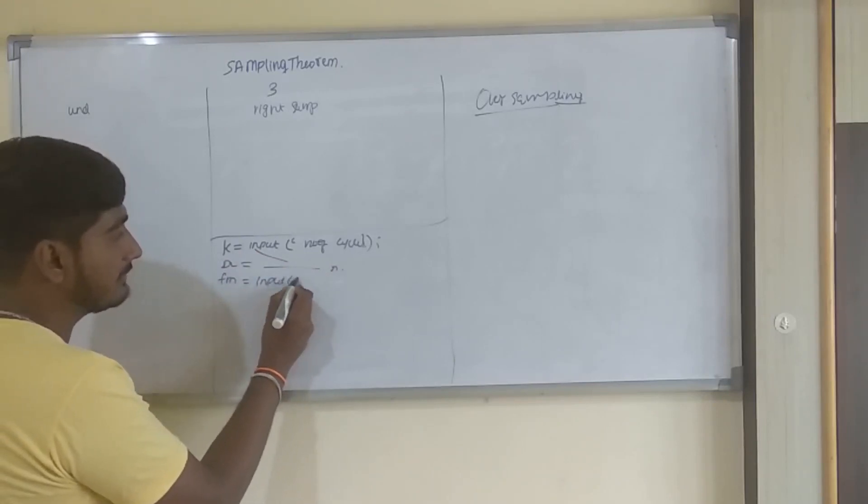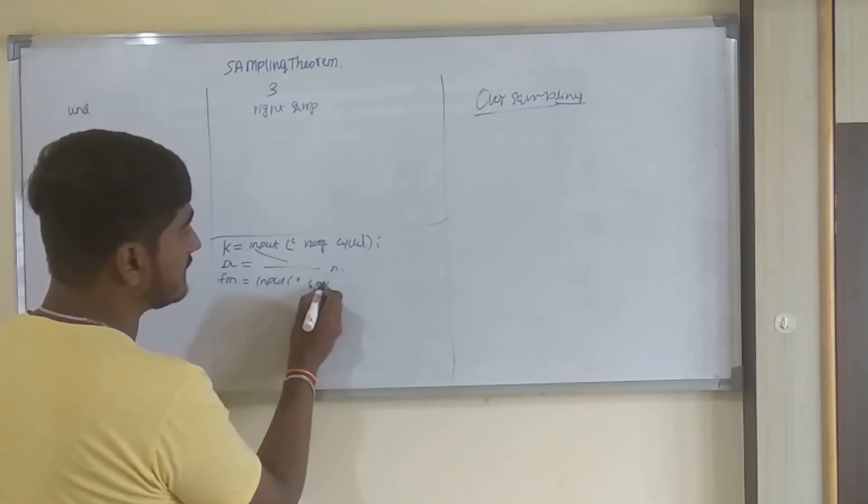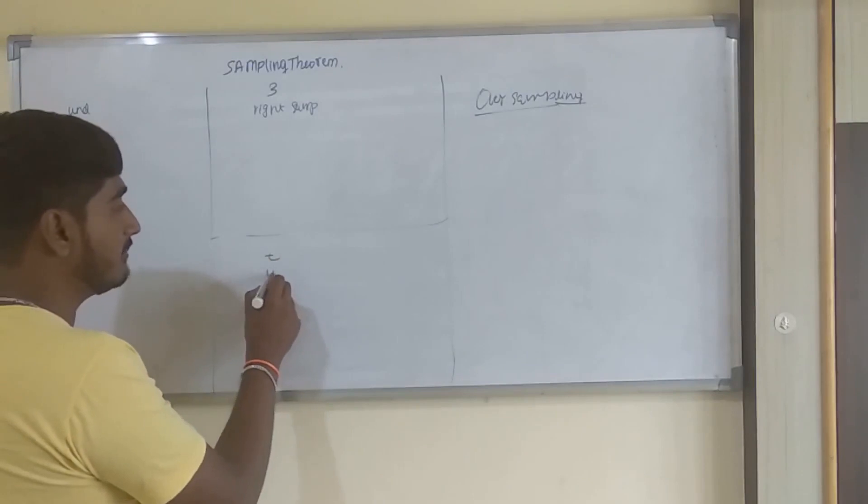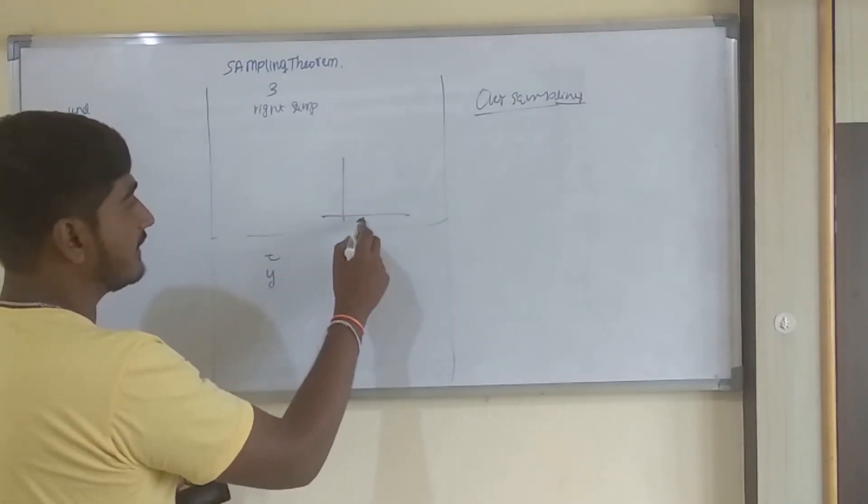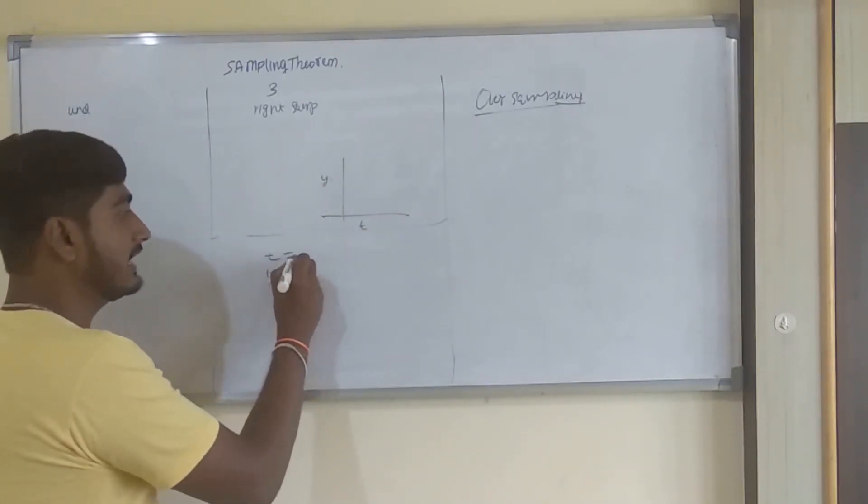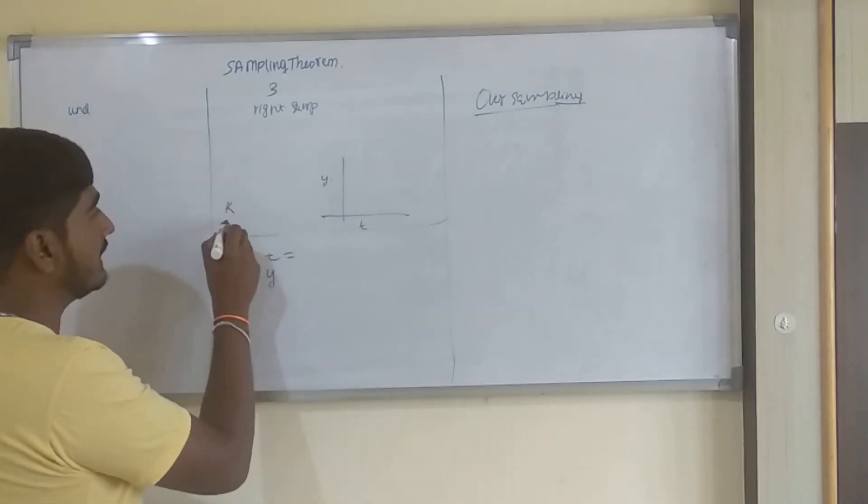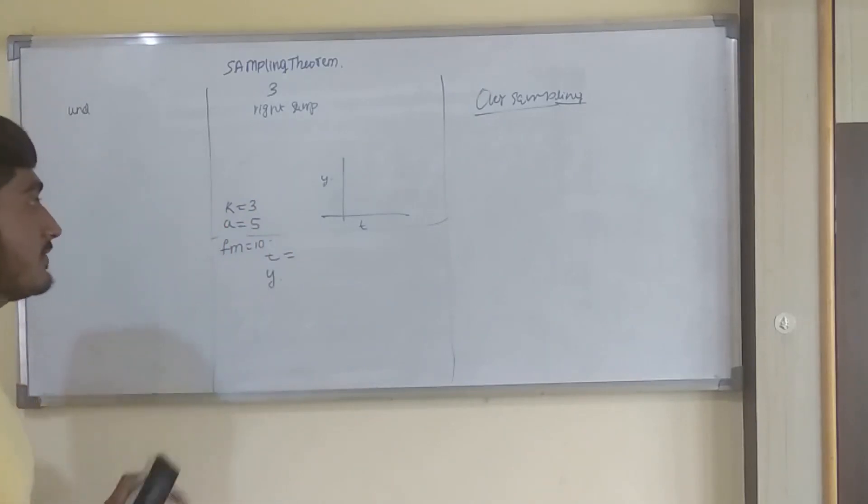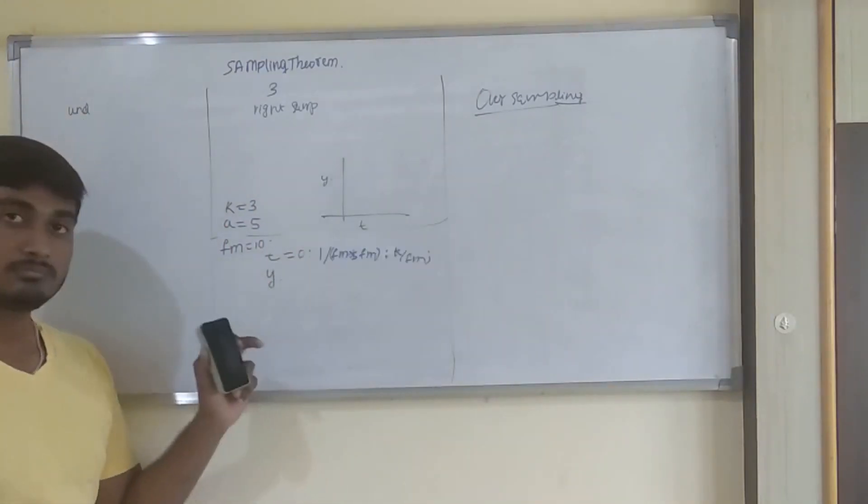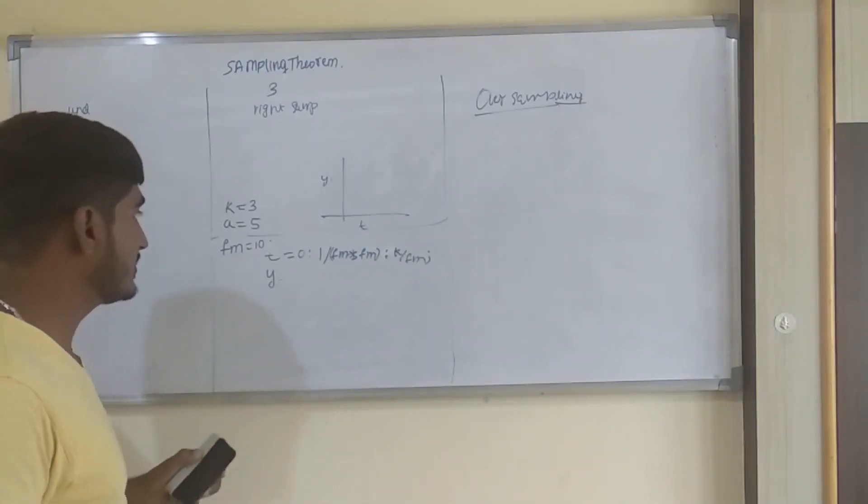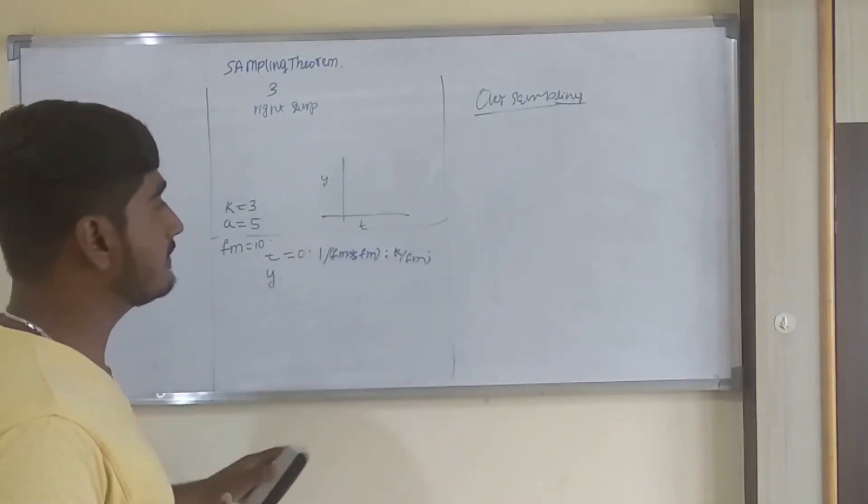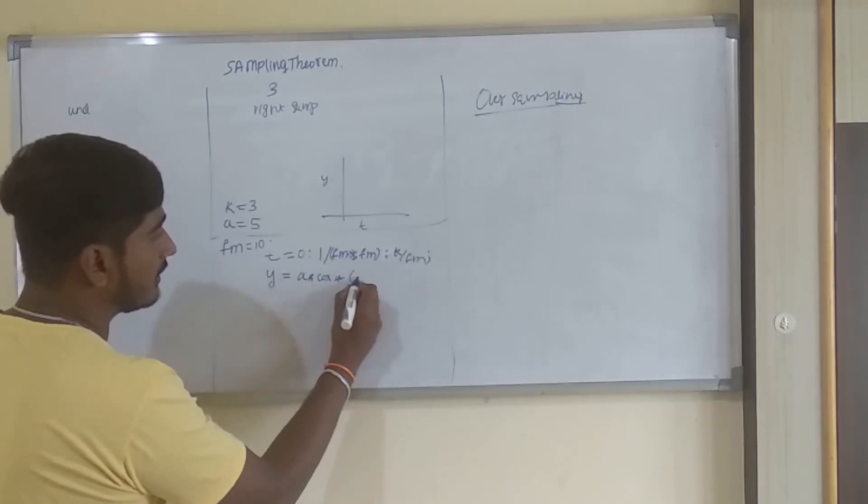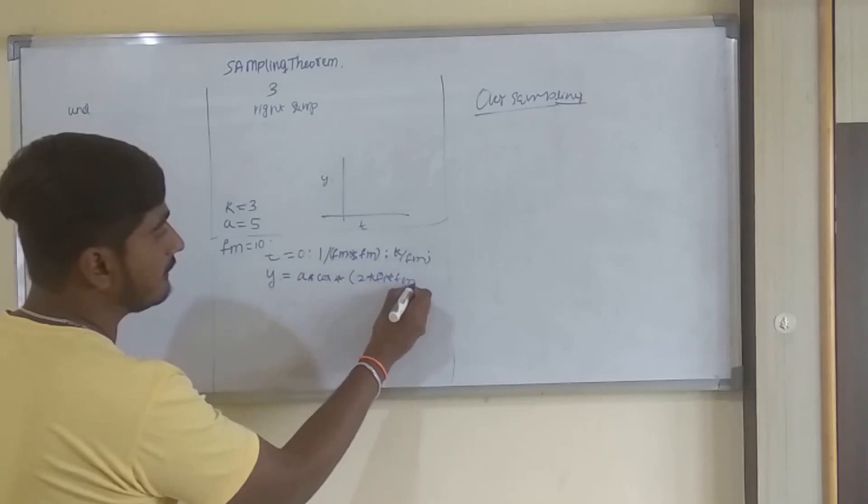You need to take Fm. Enter frequency. Divide the time axis and the amplitude axis. We will consider this as a graph: this will be time and this will be amplitude. For T, I already have the value of K, A, and Fm. Assume K is 3, A is 5, and Fm is 10. I will define T as: Fm equals 10, T equals 0 to 1 by Fm times Fm times K by Fm.